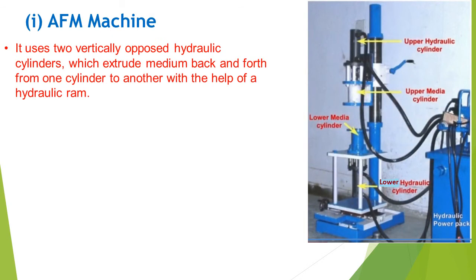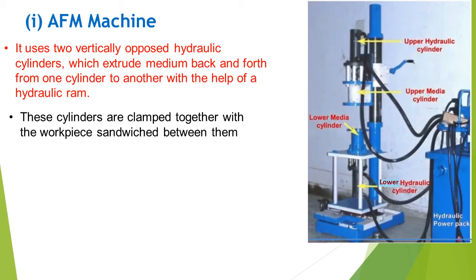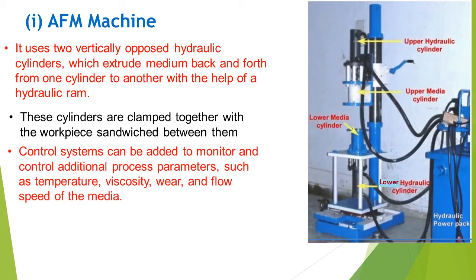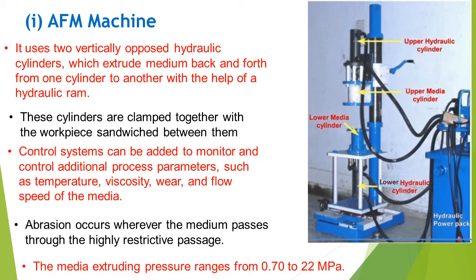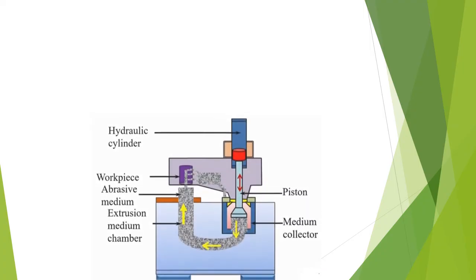The AFM machine, as seen from this particular diagram, uses two vertically opposite hydraulic cylinders which extrude medium back and forth from one cylinder to another with the help of a hydraulic unit. The cylinders are clamped together with the workpiece sandwiched between them. The control system can be added to monitor and control additional process parameters such as temperature, viscosity, wear and flow speed of the media. Operation occurs wherever the medium passes through the highly restrictive passage. The media extruding pressure ranges from 0.70 to 22 MPa.